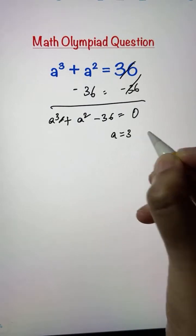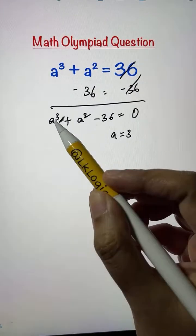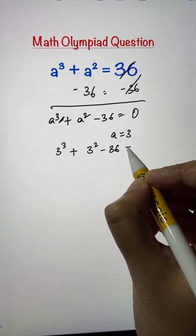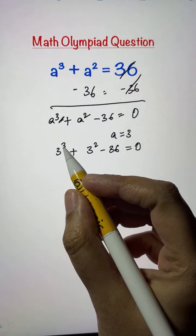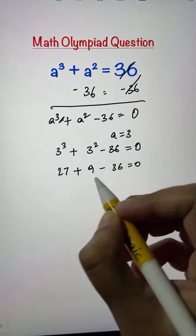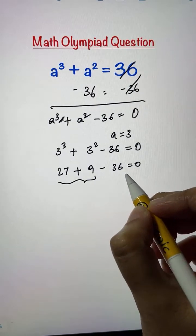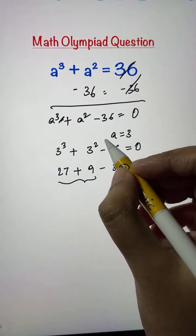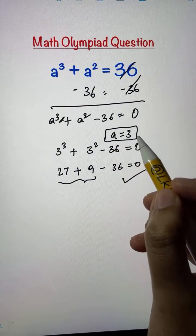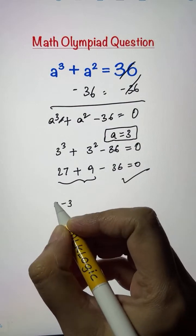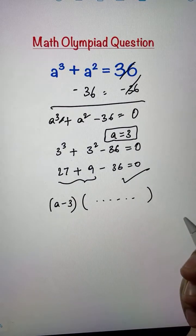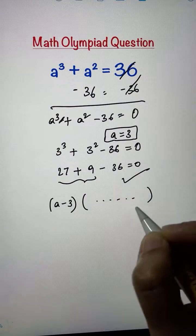When a equals 3, substituting gives: 3 cubed plus 3 squared minus 36. That's 27 plus 9 minus 36, which equals zero. Yes, that's true! So we have one root: a equals 3. Bringing 3 to the other side, we get the factor (a minus 3). Now I need to find what it's multiplied by.